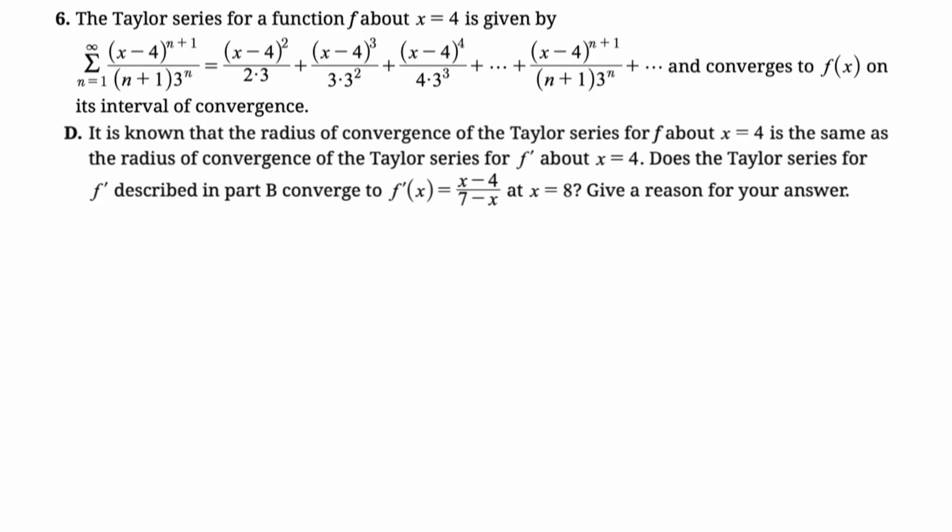Does the Taylor series for f prime described in part b converge to f prime x minus 4 over 7 minus x at x equals 8?